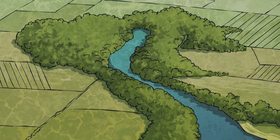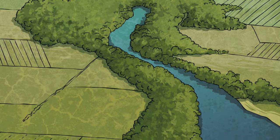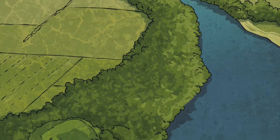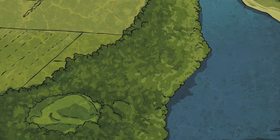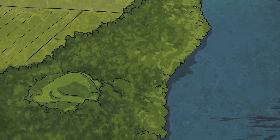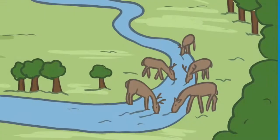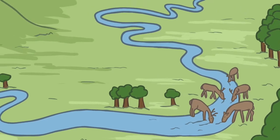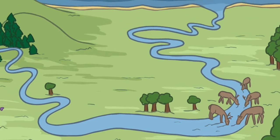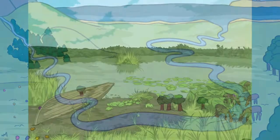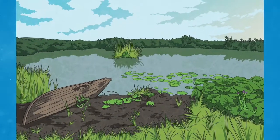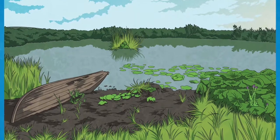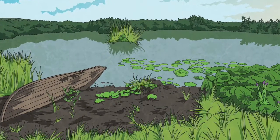A river mouth is a good place to catch fish, as this is where the river deposits different species of fish into the lakes or sea. The river mouth is also a place where sediment picked up from the river bed is deposited, often forming deltas, which are wetlands formed from the deposits of sand, gravel and clay.